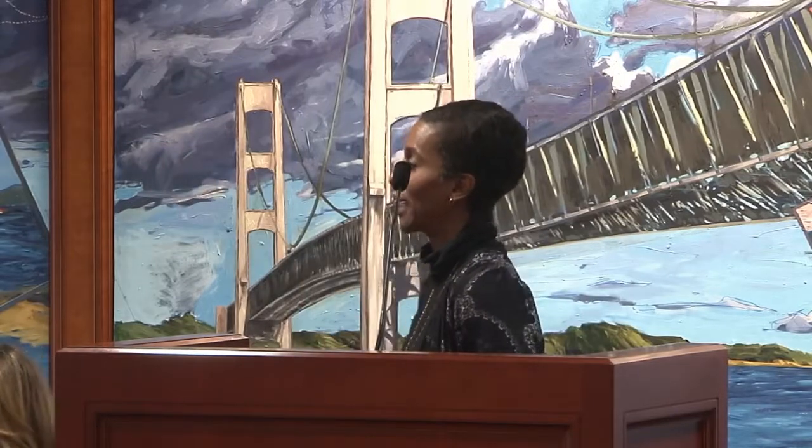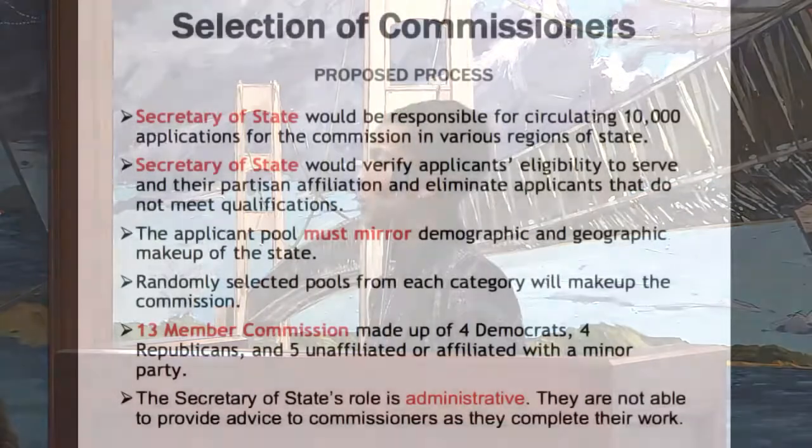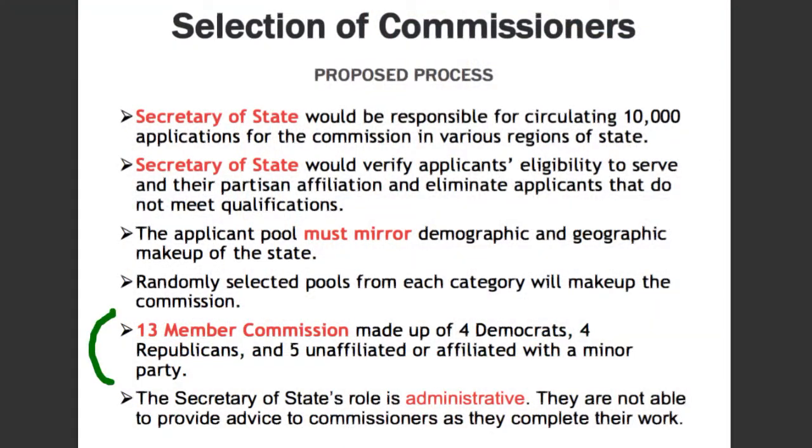One other thing to mention is that redistricting takes time — this is not something that happens in a month or two. It usually happens over the course of about a year, sometimes a year and a half. We want to make sure that commissioners who apply understand this is a long-term role. The 13-member commission would be made up of four Democrats, four Republicans, and five unaffiliated or affiliated with a minor party.